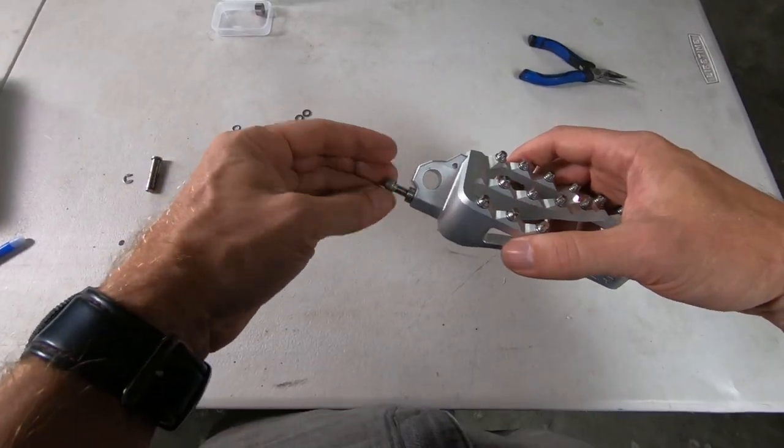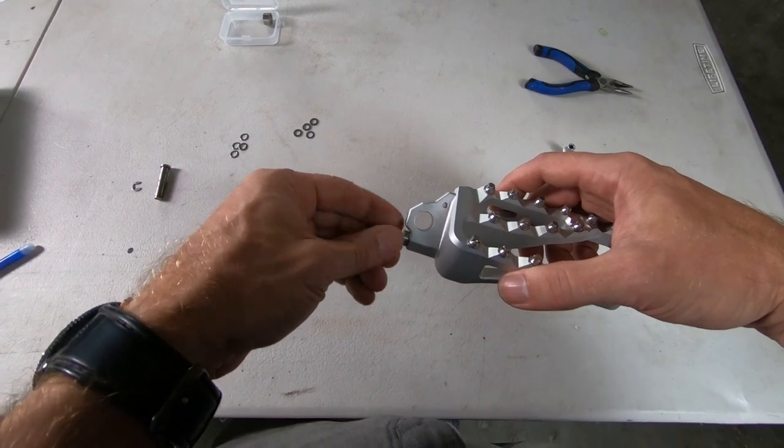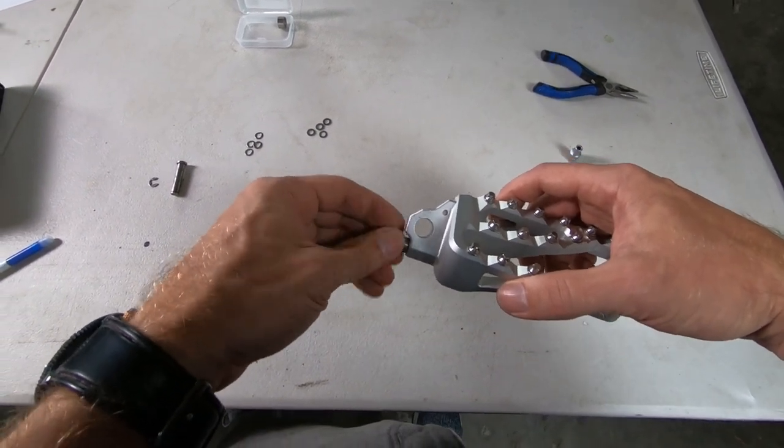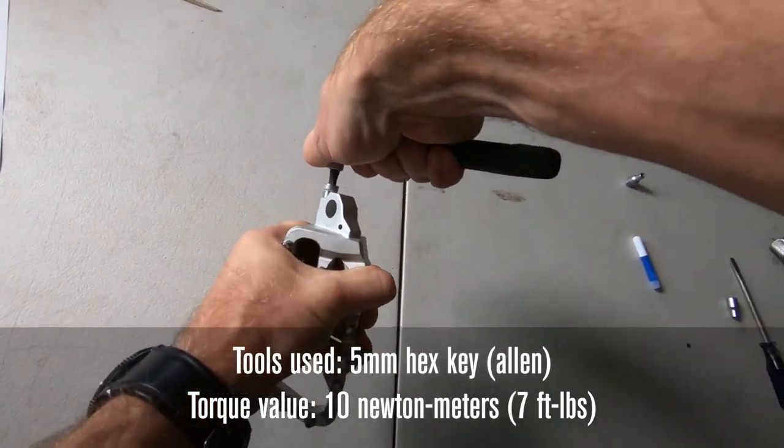Tighten them down to 7 newton meters or 5 foot pounds. Same thing on this side, we want to get our camber adjustment screw installed. Four-millimeter spacer puts the peg at neutral. Using a 5-millimeter hex key, tighten to 10 newton meters or 7 foot pounds.